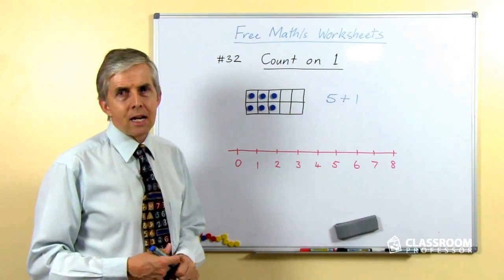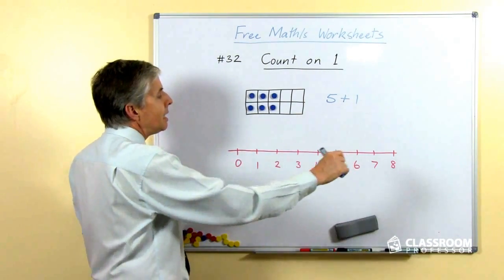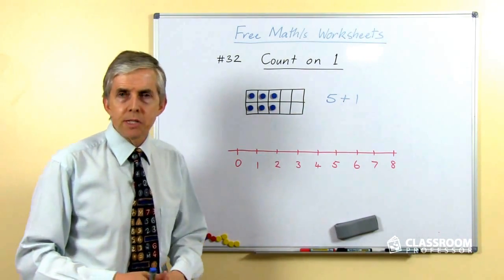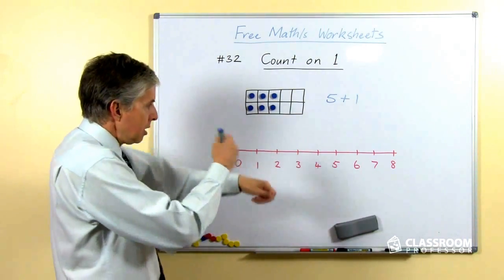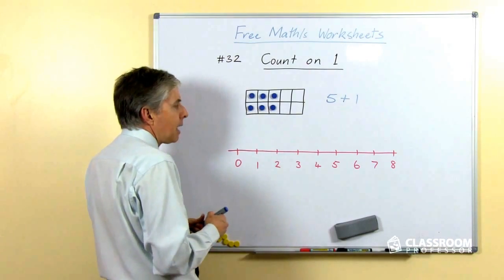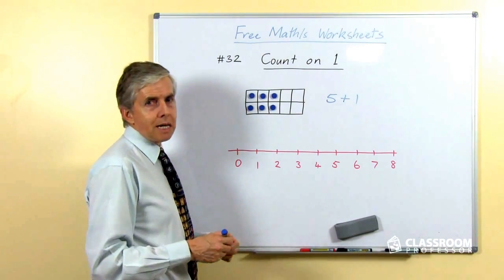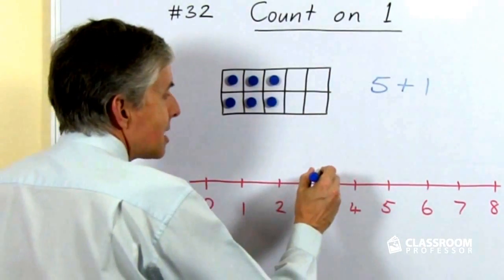So that's the 10 frame for counting on. The number line works in a similar sort of way except of course it's a purely linear representation, it's all in one dimension, it's in a long straight line, we never sort of double up and come back underneath as with the 10 frame. And in this one we're simply saying what number comes next?